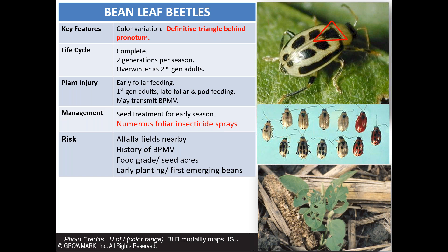Bean leaf beetles can be managed using seed treatments, but there are also various insecticide sprays that can be used in-season. They overwinter as adults, feed on soybeans, mate, and lay eggs. Those eggs hatch and give rise to another generation in the summer, feeding on soybean leaves and pods. Pod damage can be a lot more detrimental to yield. Seed treatment packages will not have activity on those late summer generations once the residual is worn off, but suppressing the overwintering adult population may result in fewer beetles and less damage later on.